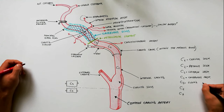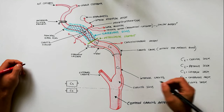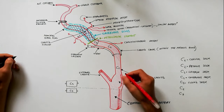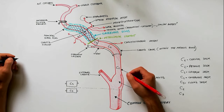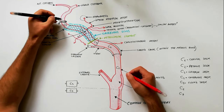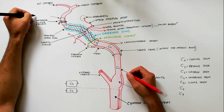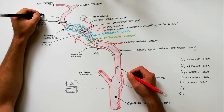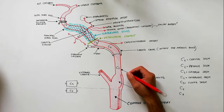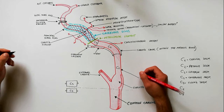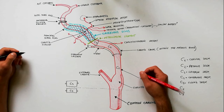The C5 segment, or the clinoid segment, is another short segment that begins after the artery exits the cavernous sinus at the proximal dural ring and extends distally to the distal dural ring, after which the carotid artery is considered intradural and has entered the subarachnoid space. The clinoid segment normally has no branches.